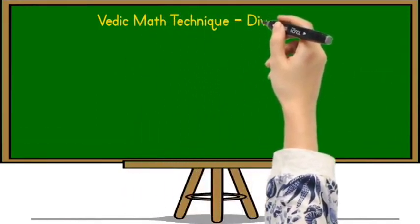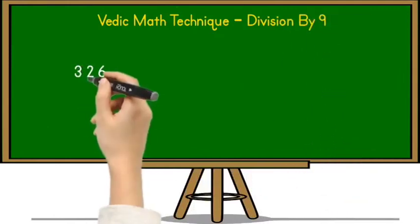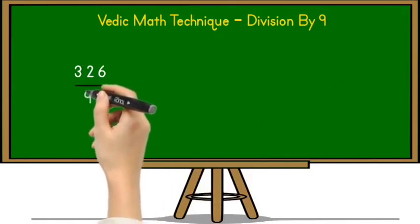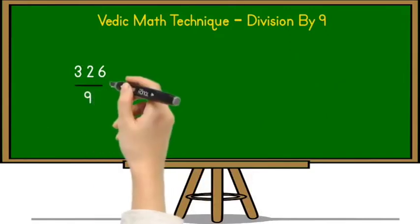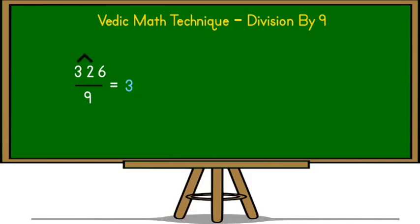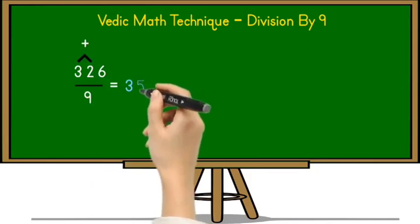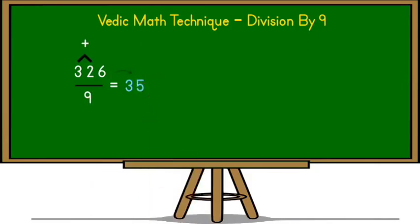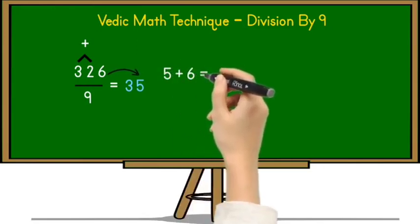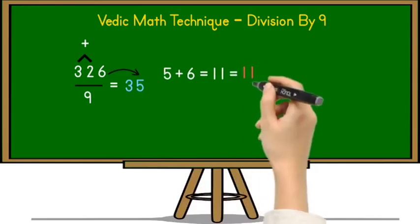Let's solve one more example using a 3-digit number: 326 divided by 9. For a 3-digit number we make some changes to the technique. First, write down the 100th place digit, 3. Then add the 10th and 100th place digits together: 3 plus 2 equals 5 — write down 5 after 3. After that, add 5 with the unit place digit of 326: 5 plus 6 equals 11.